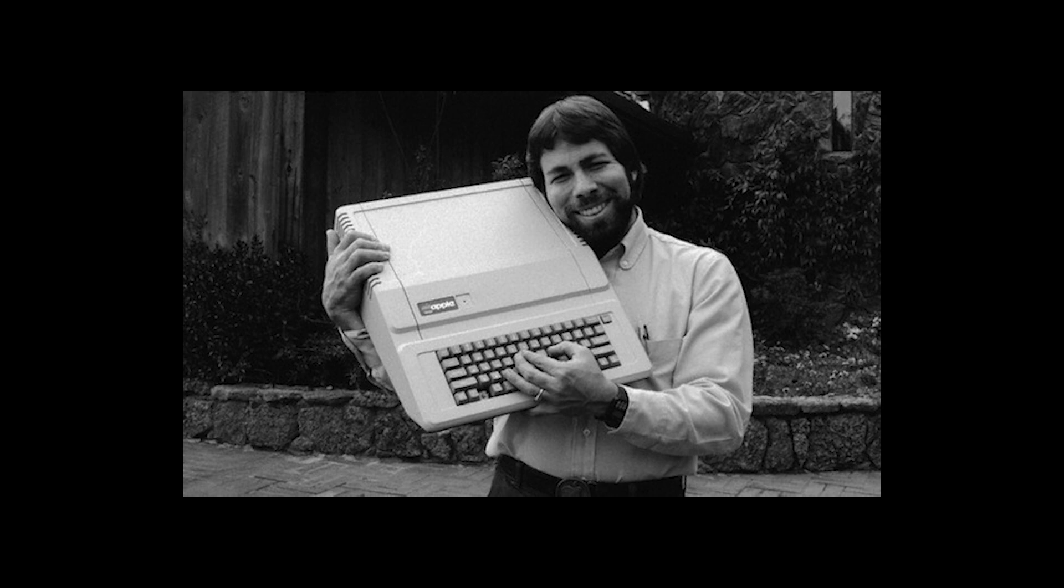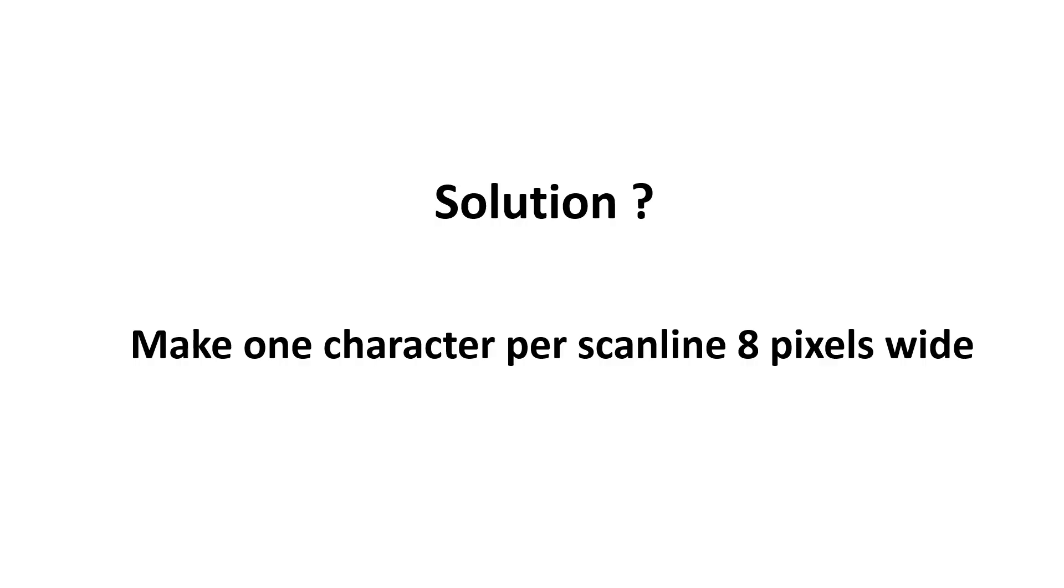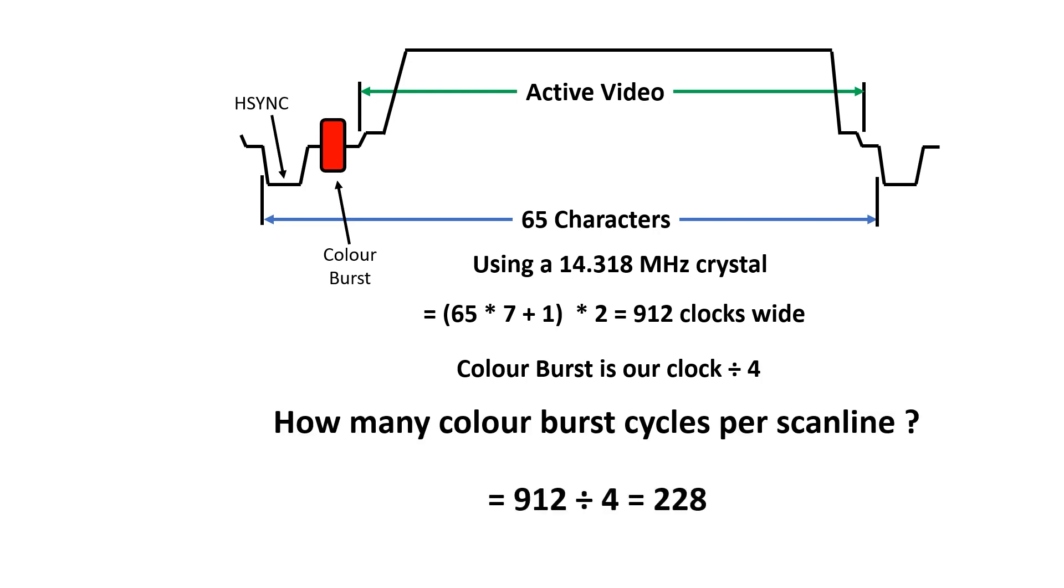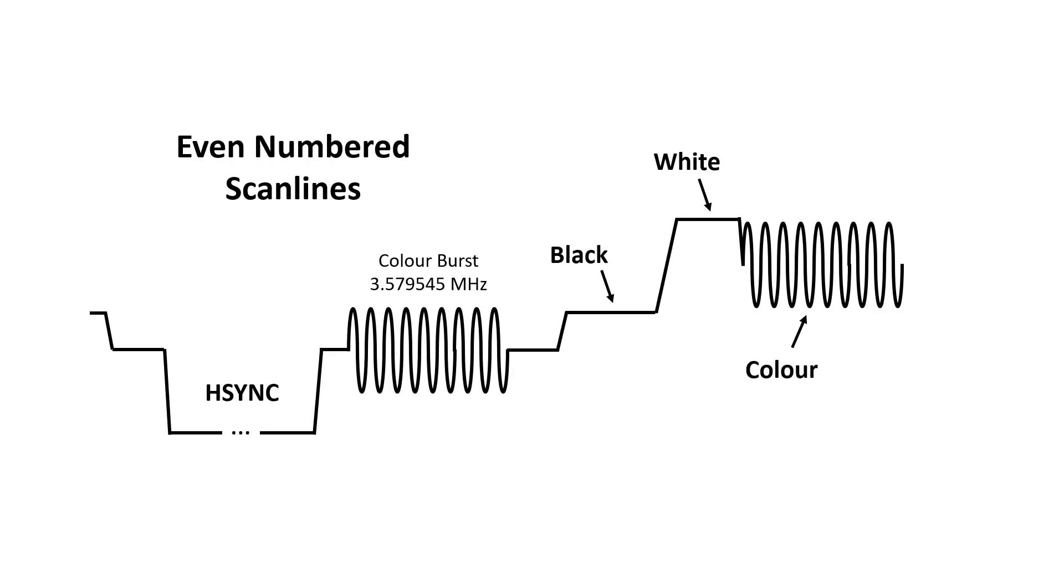So what did Steve Wozniak do to solve this problem? He made one character in the scanline 8 pixels wide instead of 7. Now we have 65 times 7 plus 1 pixels. Times 2 gives us 912 clocks. So how many color burst cycles per scanline? 912 divided by 4 is 228. And because it's an integer, color burst will stay in phase between scanlines.